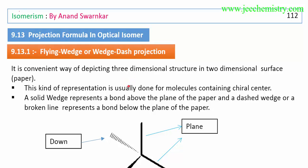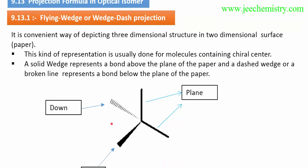First of all, we will learn about the Wedge-Dash Projection Formula — also called Flying Wedge or Wedge-Test Projection Formula. This is the structural representation of the Wedge-Dash Projection Formula. We can simply call it the Wedge-Dash Projection Formula.